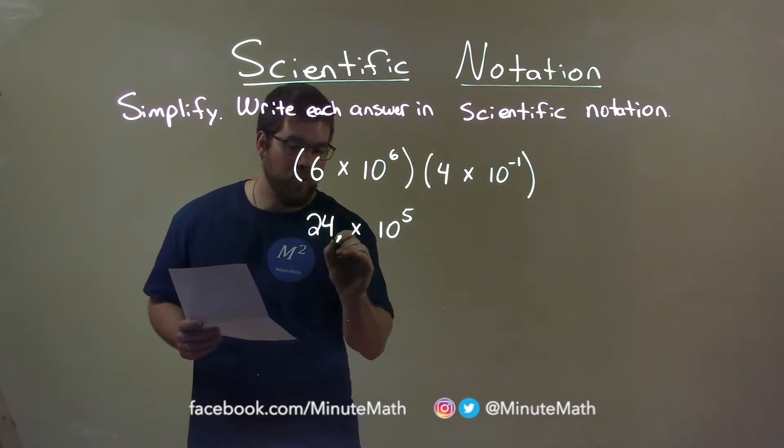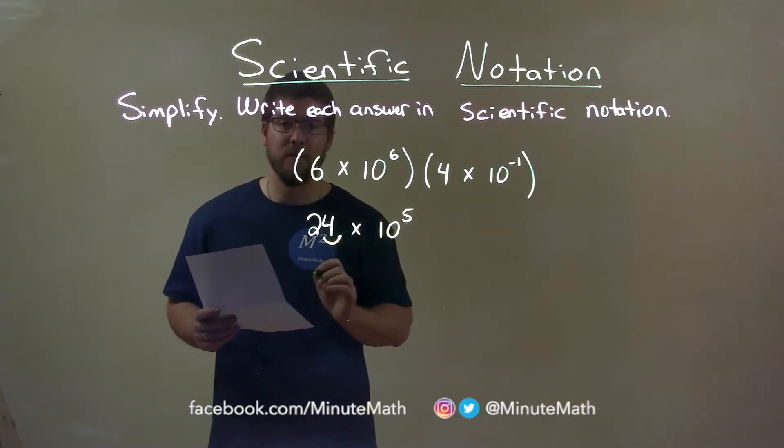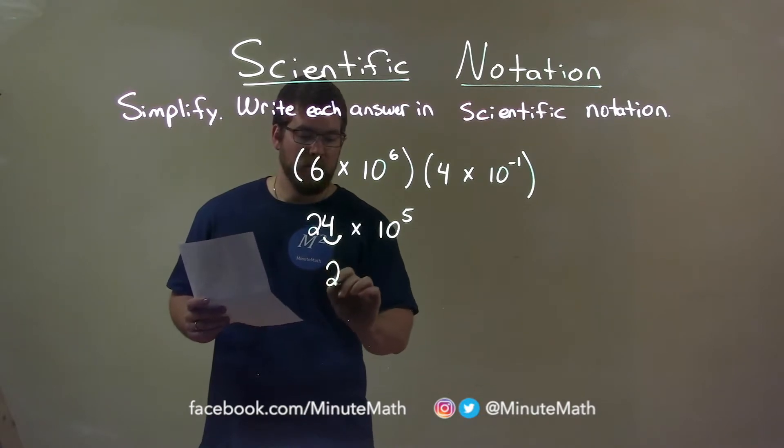Scientific notation says this 2 needs to be in the 1's position. So, that decimal moves over one spot to the left here.